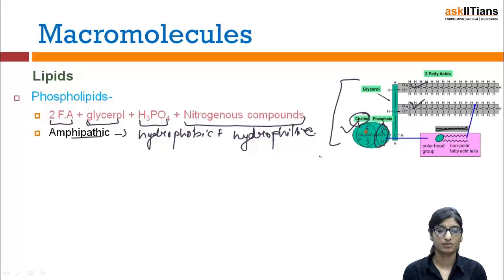One is lecithin. This is lecithin, where choline is present. This compound has N-positive inside. Location: it is present in egg yolk, oil seeds, and blood. Its function is helpful in transportation.